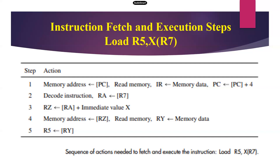Because R7 must be added with some immediate value X, the content of RA is added with the immediate value X, and that result is transferred to temporary register RZ. In RZ, that is not the data but a memory location address. Now we pass that address to memory — step four: the content of RZ is applied to the memory address, the control unit generates a read signal, memory performs the read operation, and after a fraction of a second the memory function completes. The data is then transferred to temporary register RY, and from RY the data is transferred to R5. So for load instruction, all five steps are mandatory.